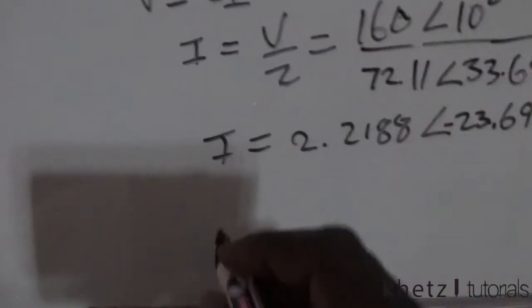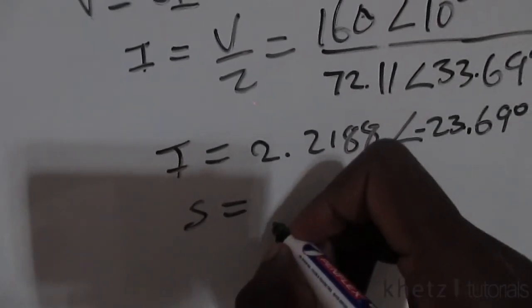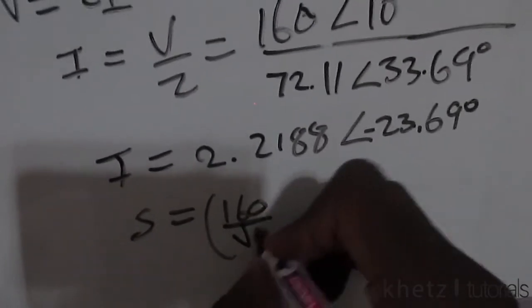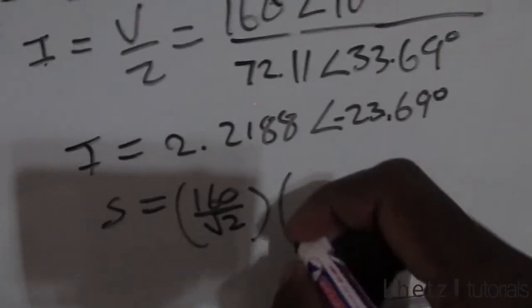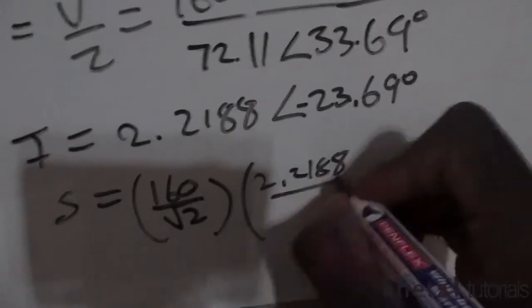Now we come back to the formula for apparent power and we want to find the VRMS and IRMS. So we do that by taking the magnitudes, finding the square root of 2 divided by the square root of 2, and we take the magnitude of this as well and divide by the square root of 2.